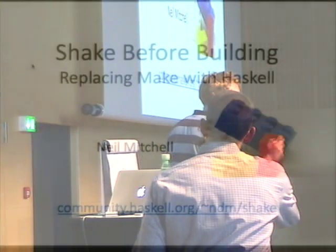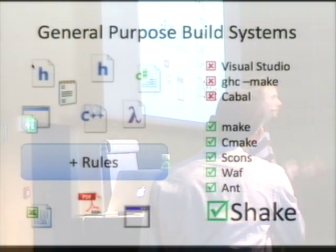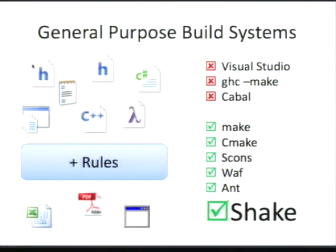This talk is going to be about build systems. A build system takes some inputs, say a C file, and produces some outputs, say an executable. A general purpose build system is one where you get to control the rules, so you say how the input maps to the output. Generally, when you're writing the rules for these general purpose build systems, you have to specify two things: what to do to go from the inputs to the outputs — so compile, link — and what the dependencies are on each step, so under what situations should you redo these compile and linking steps.